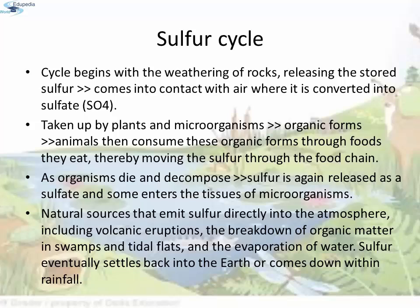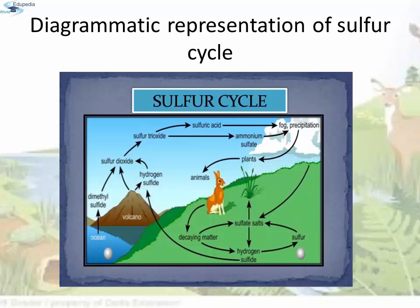Sulfur Cycle: The sulfur cycle contains both atmospheric and terrestrial processes. Within the terrestrial portion, the cycle begins with weathering of rocks releasing stored sulfur. The sulfur comes into contact with air, where it is converted into sulfate (SO4). Sulfate is taken up by plants and microorganisms and converted into organic forms. Animals then consume these organic forms through food, moving sulfur through the food chain. As organisms die and decompose, some sulfur is again released as sulfate and some enters the tissue of microorganisms. Natural sources such as volcanic eruptions, breakdown of organic matter in swamps and tidal flats, and evaporation of water also emit sulfur directly into the atmosphere. Sulfur eventually settles back into the earth or comes down within rainfall.